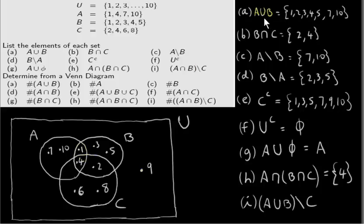To list the elements in A union with B, we take all the elements that are in both sets A and B. So we have one, two, three, four, five, seven, and ten.